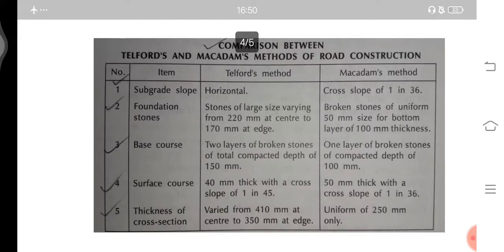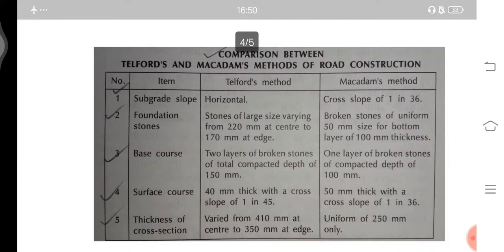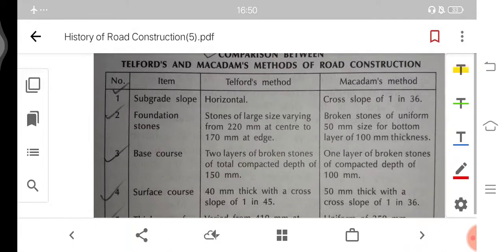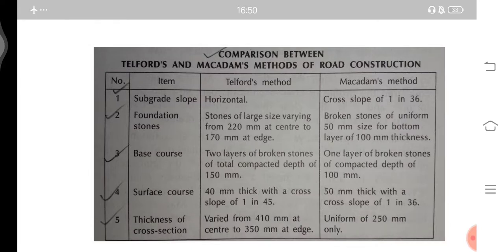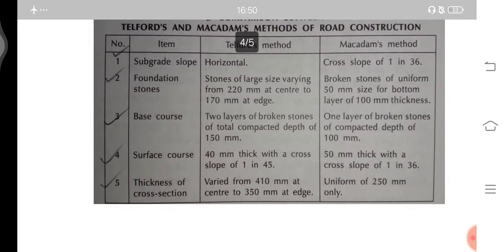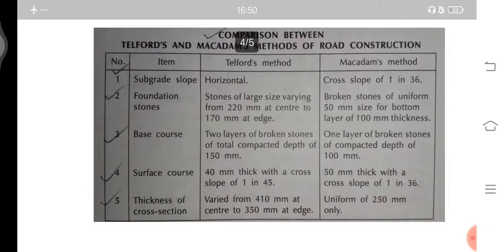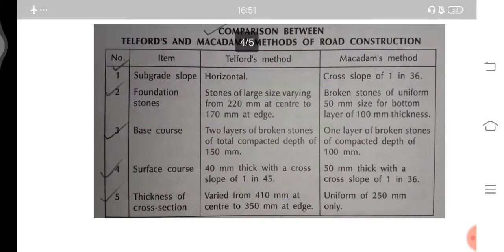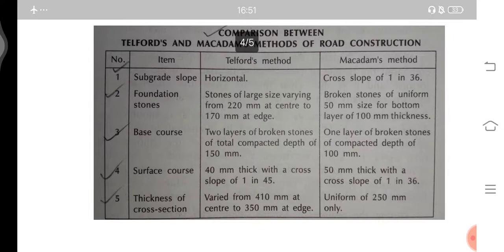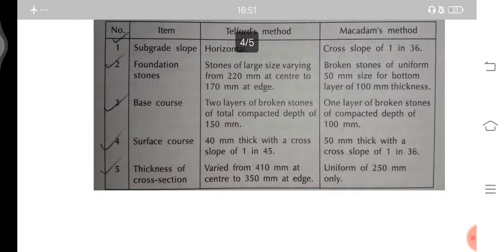Comparing Telford and Macadam: Telford kept the subgrade slope horizontal, while Macadam used a subgrade slope of 1 in 36. Telford used large foundation stones varying from 220 mm at center to 170 mm at edge; Macadam used uniform broken stones of 50 mm for a bottom layer 100 mm thick. Telford's base course was two layers of total compacted depth 150 mm; Macadam's was one layer of 100 mm. Surface course was 40 mm thick at 1 in 45 for Telford and 50 mm at 1 in 36 for Macadam. Total thickness varied from 410 mm at center to 350 mm at edge for Telford, while Macadam was uniform at 50 mm.